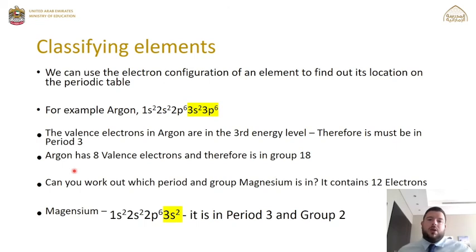For magnesium, the electron configuration is 1s² 2s² 2p⁶ 3s². The valence electrons are in the third principal energy level, and counting them, we have 2. Therefore, the third principal energy level means period 3, and the two valence electrons means group 2.